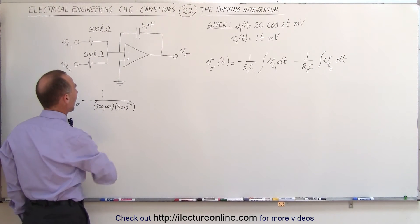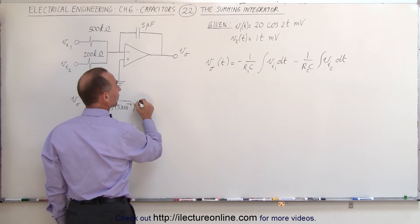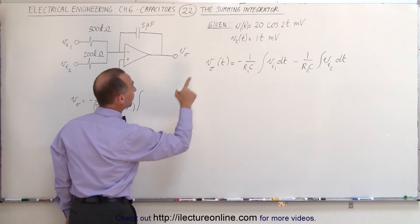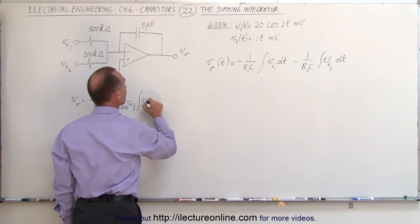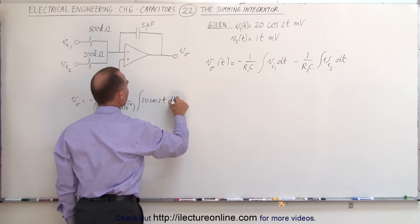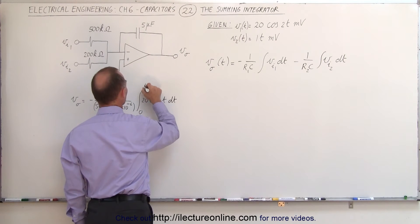And so we have, that would be 2.5, and we multiply that times the integral of the input voltage, which is 20 times the cosine of 2t dt, and that would be from 0 to t,